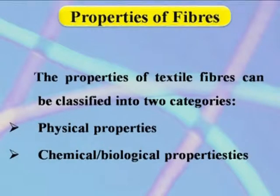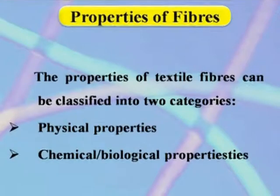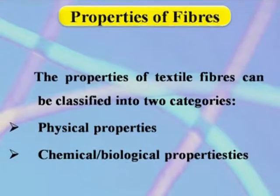Properties of Fibers. The properties of textile fibers can be classified into two categories: physical properties, and chemical or biological properties.